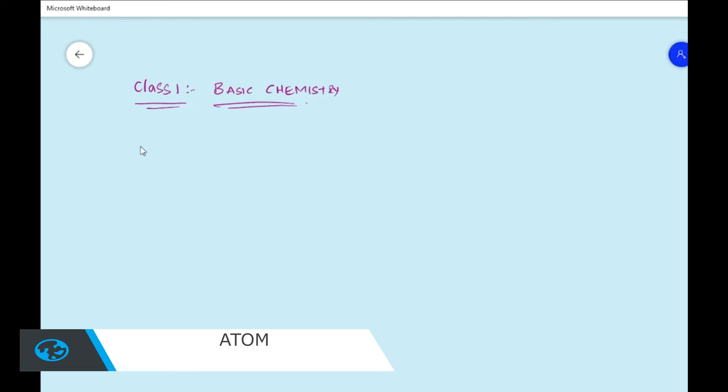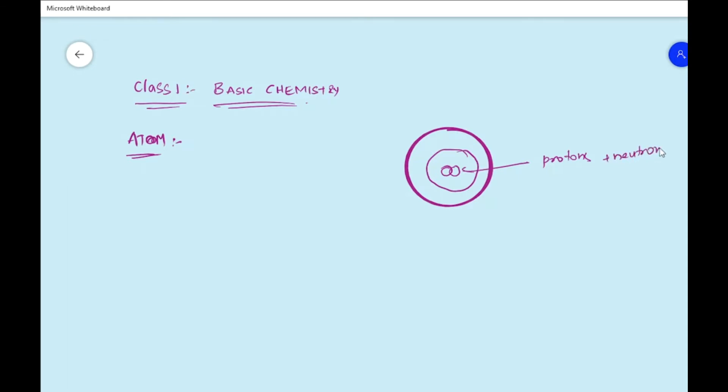Hello all, welcome to Class 1: Basic Chemistry. In this class we will know very basic things about chemistry. First we will discuss about atoms. We all know what an atom is, right? An atom is a basis of creation. An atom will have protons, neutrons, and electrons.